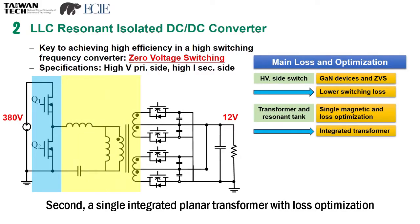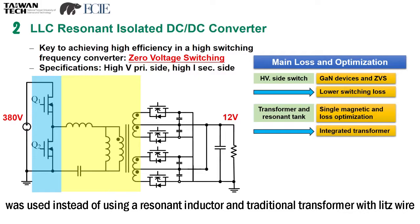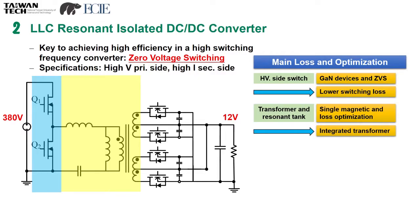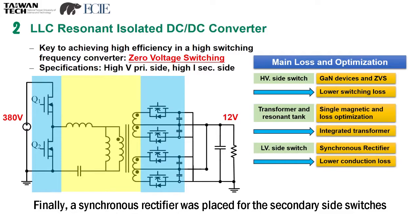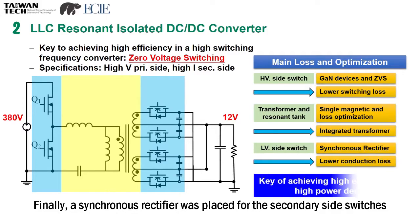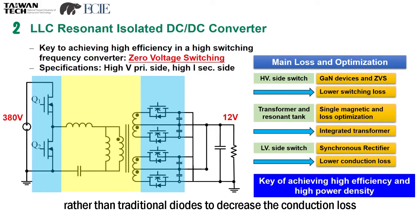Second, a single integrated planar transformer with loss optimization was used instead of using a resonant inductor and traditional transformer with wire windings. Finally, a synchronous rectifier was placed for the secondary side switches rather than traditional diodes to decrease the conduction loss.